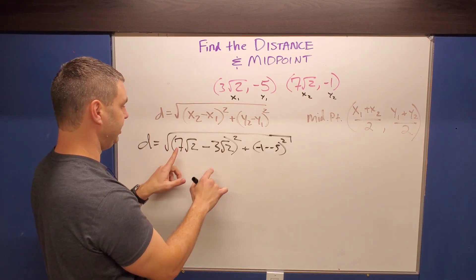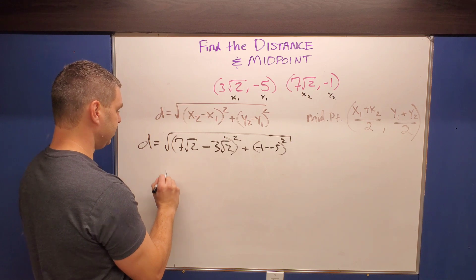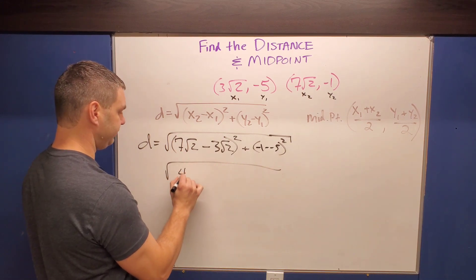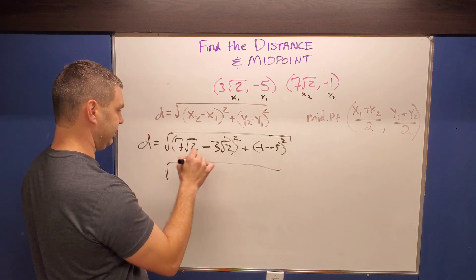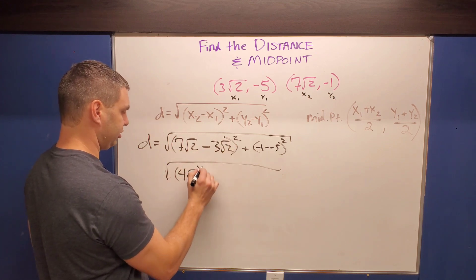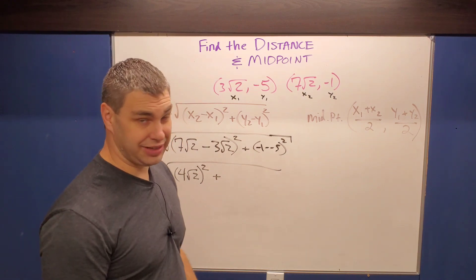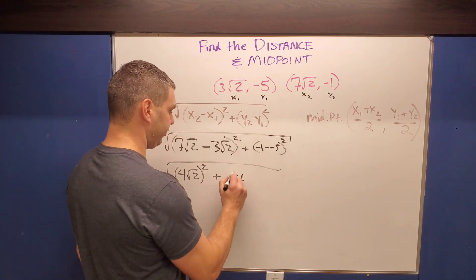Or not cancel, but it's gonna simplify nicely. Seven minus three is four. So we can say this is gonna give us, it's still big square roots, four square roots of two, all right? And it's still gonna be inside this quantity squared, we haven't squared it yet, plus negative one plus five is four.